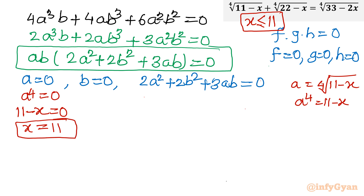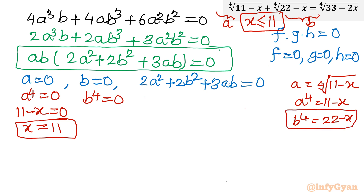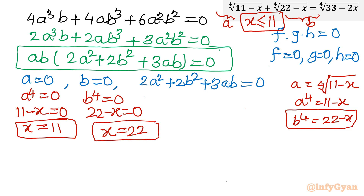For the second equation: if b equals 0, then b⁴ equals 22 minus x equals 0, giving x equals 22. However, as per our domain condition, we must reject this solution because 22 is greater than 11, so it does not satisfy our restriction x less than or equal to 11.